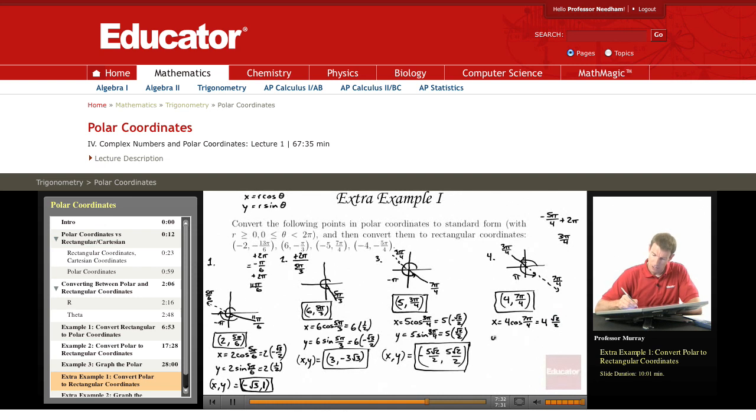And y is 4 sine of 7π over 4, which is 4 times negative √2 over 2. Negative because we're in the fourth quadrant. The y coordinate is negative. And so the x and y collectively are 2√2 and negative 2√2.